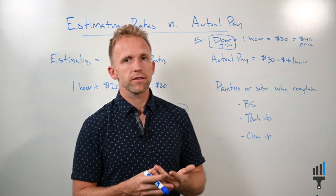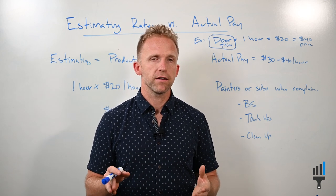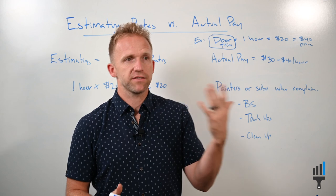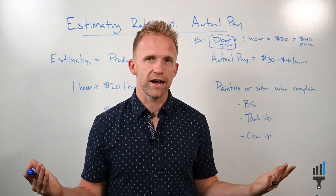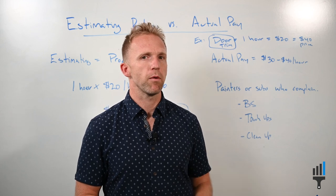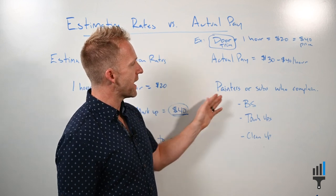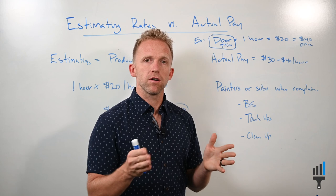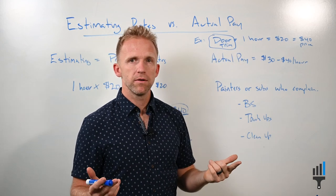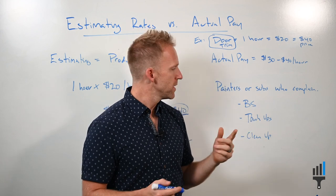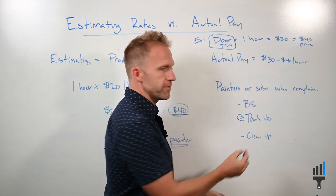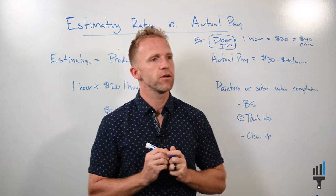If you are using accurate production rates and a painter or subcontractor says 'this price isn't fair,' it can only be one of a few things. One is they're kind of BSing you - which is fine, because if they can ask for more money and get it, they should. Or if they actually aren't making good money, it's because they're taking more than an hour to paint a door trim.